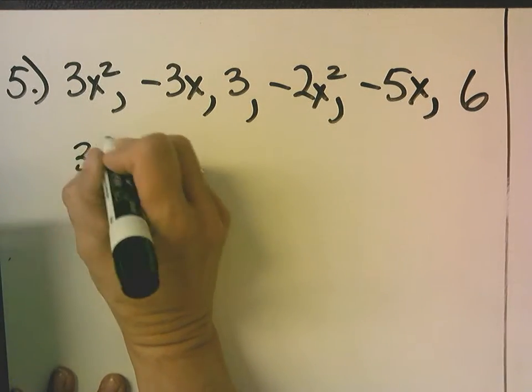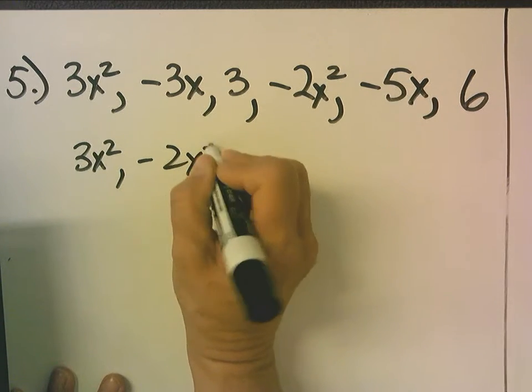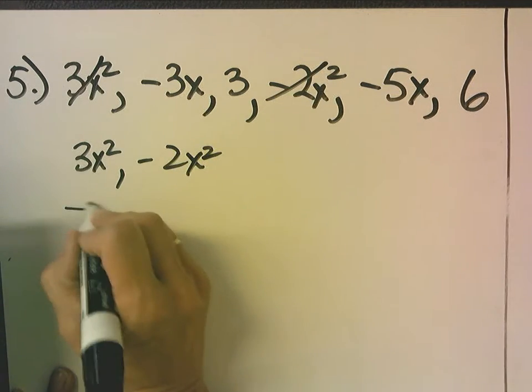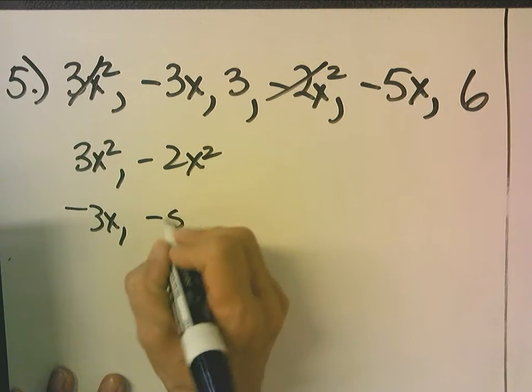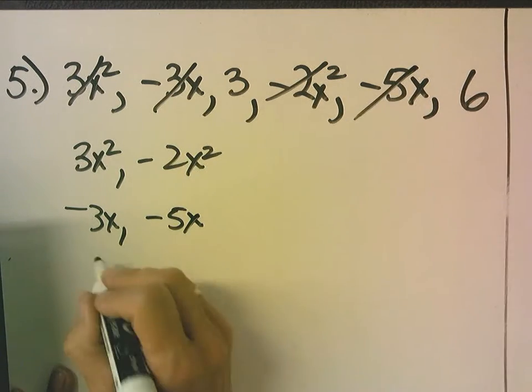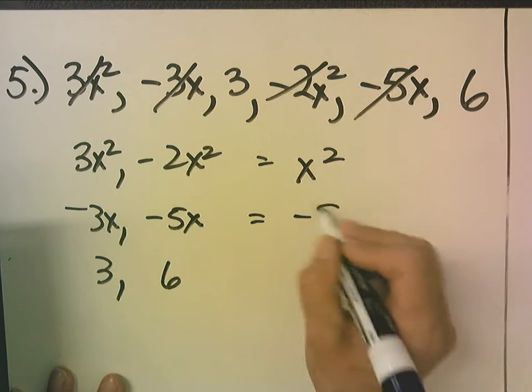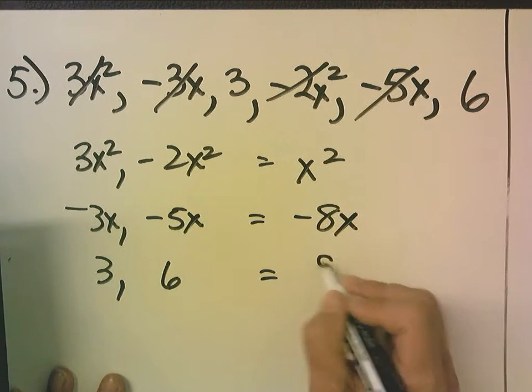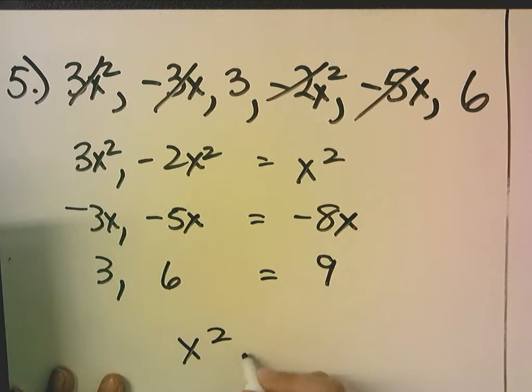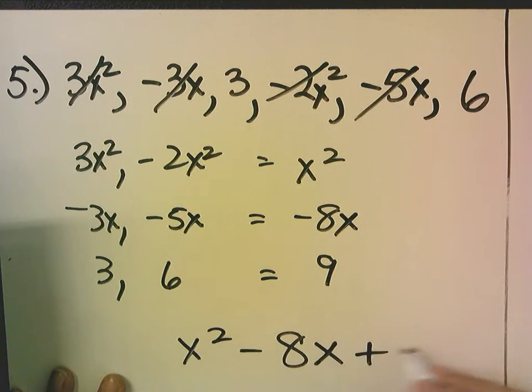So I have 3x squared, negative 2x squared. I have negative 3x, negative 5x. And I have 3 and 6. So this equals x squared. This is negative 8x. This is 9. So I get x squared minus 8x plus 9.